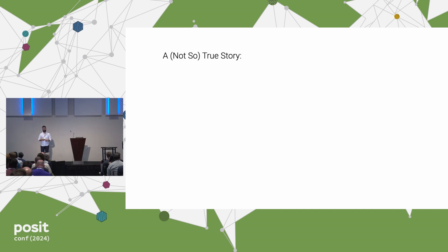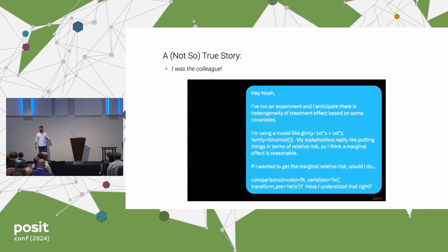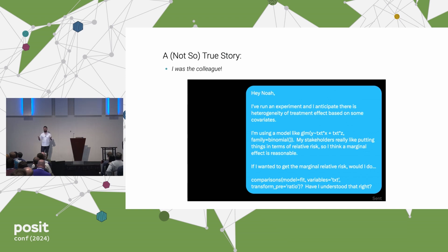Now, I told you this was a true-ish story, and I owe it to you to tell you what was true and what was an exaggeration. The truth is: there was no colleague. I was the colleague — this is my story. This is a DM from that bird website where I'm DMing somebody called Noah, and you can see exactly what I asked: I run this experiment, I've got some heterogeneity of treatment effect, I fit this model, but my stakeholders want something called relative risk — it's simple, very comparable to lift. I want to use marginal effects. How do I do this? Is this even the right tool? I would not be up here without the help of the authors of marginal effects and everybody in stats Twitter, so thank you to them.